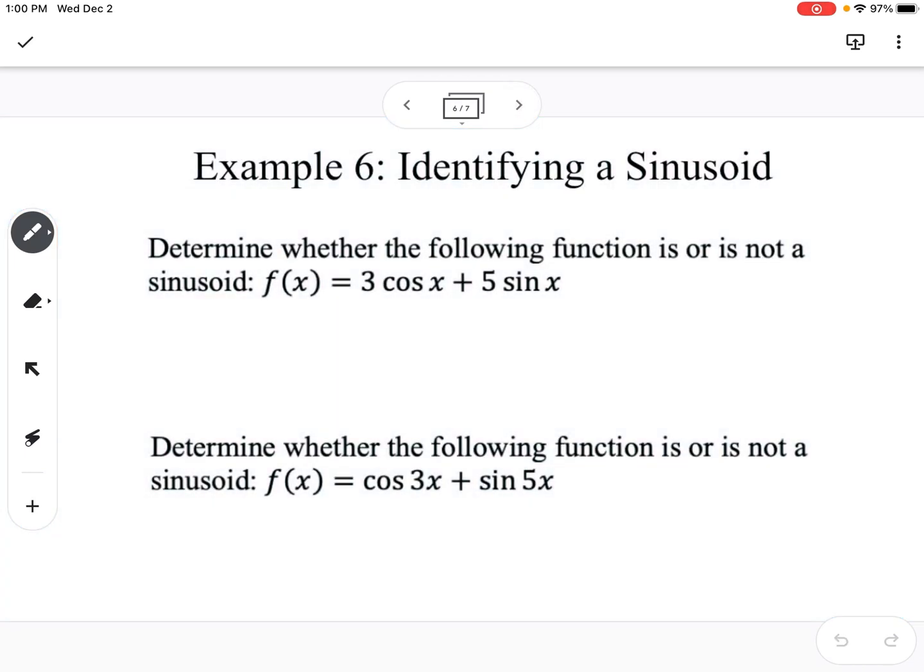Our first example, we have two examples of this. So it says identifying a sinusoid. Determine whether the following function is or is not a sinusoid. So if we look at this, what we're focusing on is these two functions. For this one, we would say yes, because you can see this is just cosine of x and this is just sine of x, they both have a period of 2 pi. So because they both have the same period, we can say yes, this is a sinusoid.